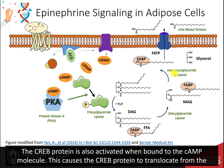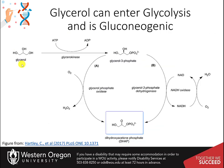Other constitutively active lipases cleave the other two remaining fatty acids from the glycerol backbone. Fatty acid binding proteins chaperone the free fatty acids within the cytoplasm. Proteins such as fatty acid transport protein, FATP, are used to excrete the free fatty acids into the bloodstream. Digestion of triacylglycerides, TAGs, also releases the glycerol backbone.